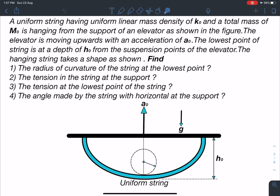The elevator is moving upwards with an acceleration of a0. The lowest point of the string is at a depth of h0 from the suspension points of the elevator. The hanging string takes a shape as shown.